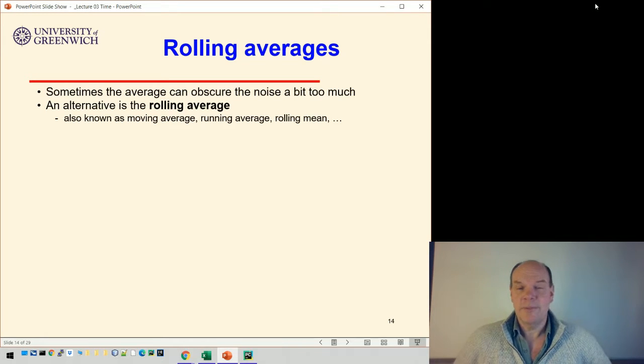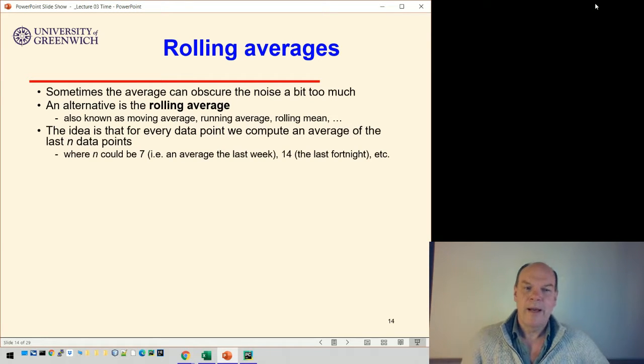It's sometimes called a moving average, running average, or rolling mean. All these terms mean the same thing. The idea is that for every data point you get an average of the last n data points, where n could be something like seven to get an average over the last week, or 14 to get an average over the last fortnight. The bigger the interval, the smoother the data you get.